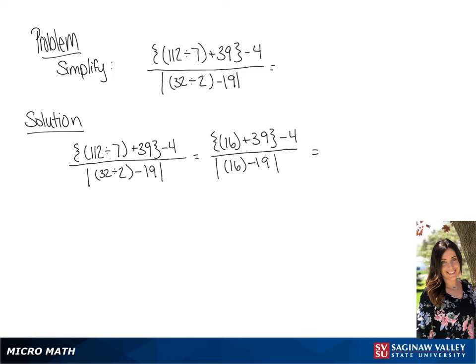We're going to simplify the terms in the absolute value brackets as well as the parentheses in the numerator. So we have 55 minus 4, all over the absolute value of negative 3. So we have 51 over 3, which we can simplify to 17.